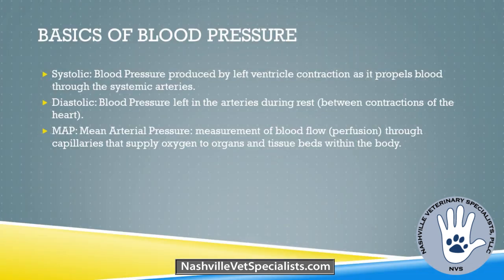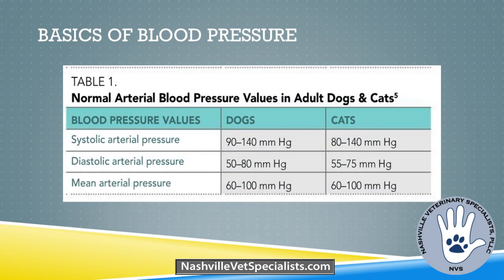The basics: your systolic is going to be the blood pressure produced by the left ventricle contraction as it propels blood through the systemic arteries — that's the contraction phase. Your diastolic is the pressure left in the arteries during rest, between contractions. The MAP is the most important when monitoring an anesthetized patient; it's really the average pressure throughout the cardiac cycle. Normals: systolic is 90 to 140, diastolic is 50 to 80, and the mean we're looking for, especially under anesthesia, is 60 to 100.